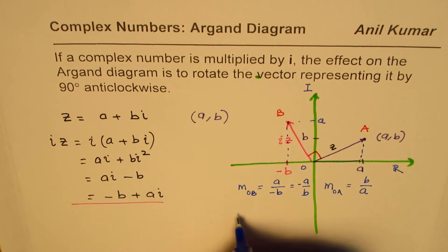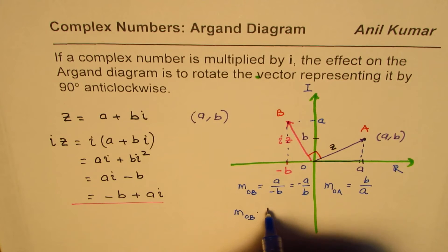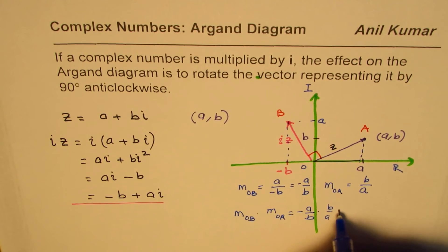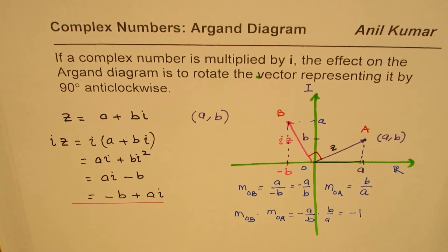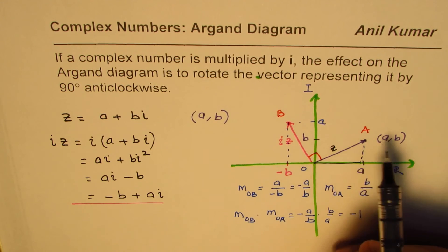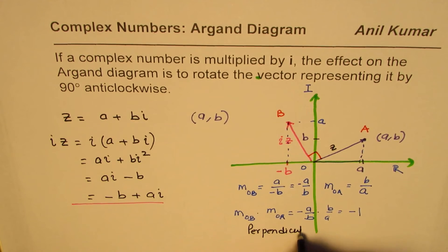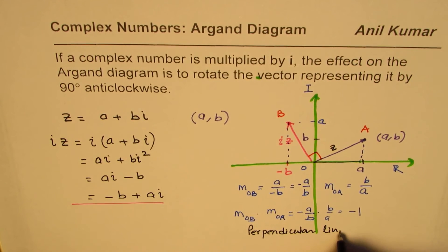Now, what happens when you multiply the two? If you multiply the two slopes, then you get minus a over b times b over a, and that is indeed minus one. So, if slope of two, when multiplied gives you minus one, it means that those two lines are perpendicular, right? So, these are perpendicular line segments.